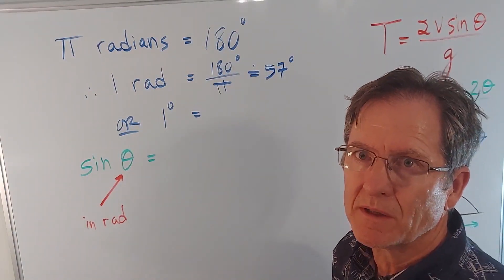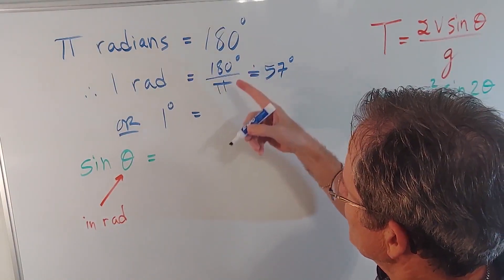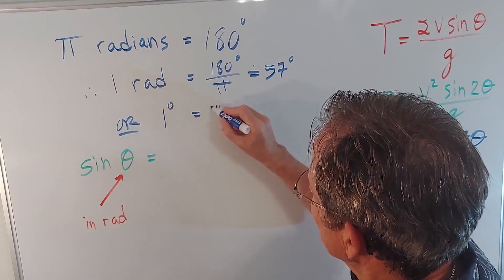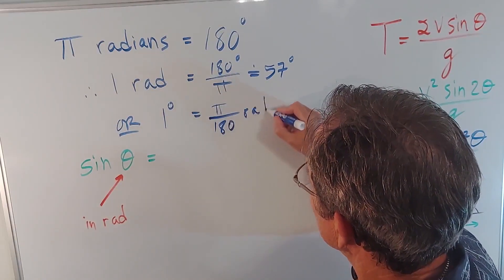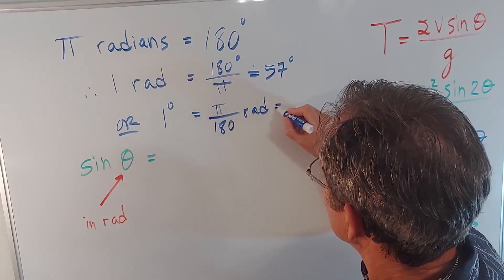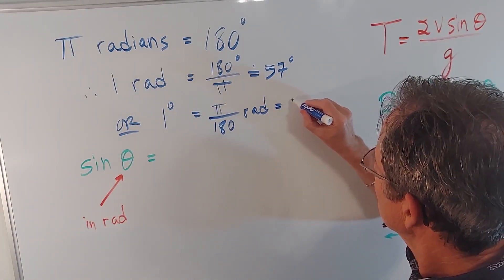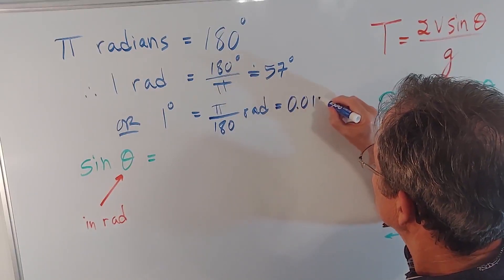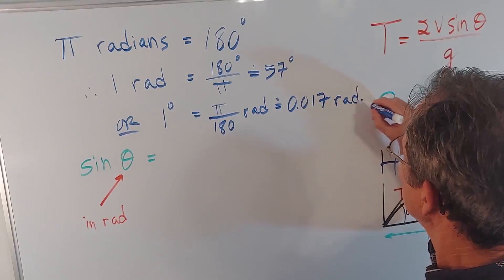Or, 1 degree, which we want to talk about, using the same formula, would be the reciprocal of this. In other words, π over 180 radians. And that's a little bit less than 0.02. If I'm not mistaken, it's approximately 0.017 radians.